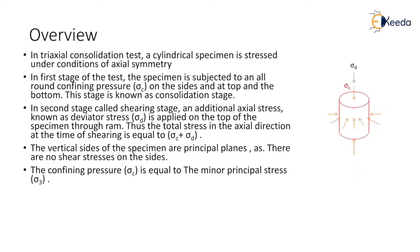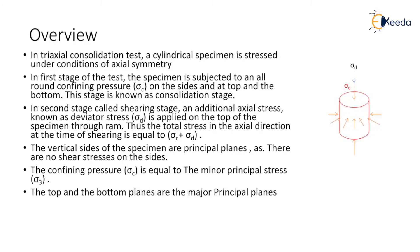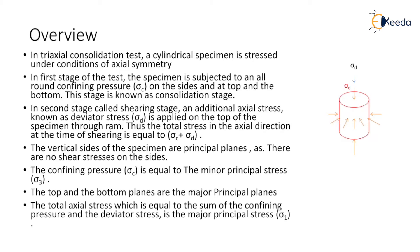The minor principal stress is denoted as sigma 3. The top and the bottom planes are major principal planes. The total axial stress, which is equal to the sum of the confining pressure and deviator stress, is the major principal stress sigma 1.